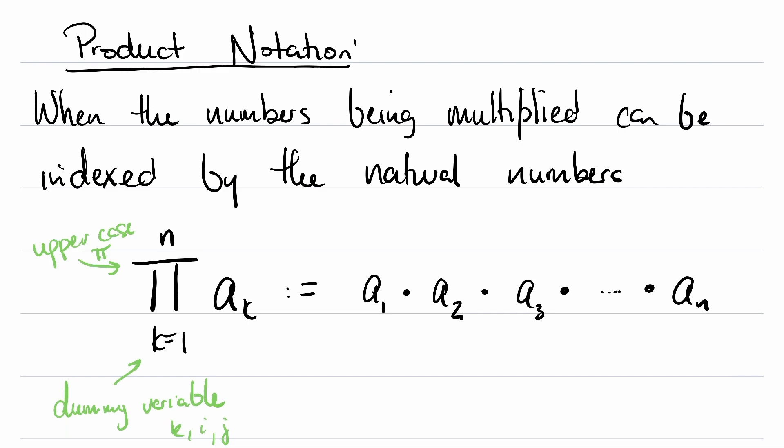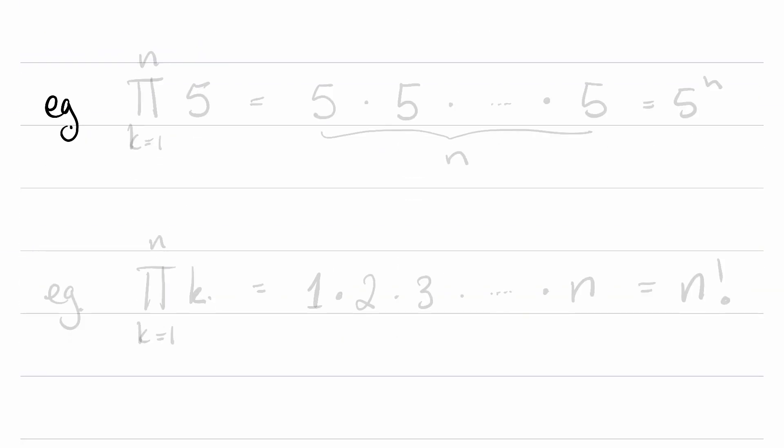Let's do a couple of examples. Example. What is this going to be? Well, we're going to count k ranges from 1 to n, and a sub k for all k is 5. So it's going to be a sub 1, which is 5, times a sub 2, which is 5,